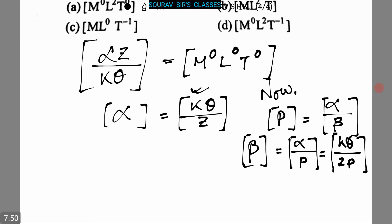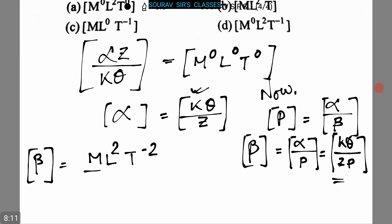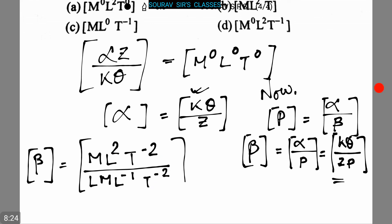Now, the dimensions of k·theta correspond to energy. Hence we can write beta = M·L²·T⁻² / (L × M·L⁻¹·T⁻²), which simplifies to beta = M⁰ L² T⁰.